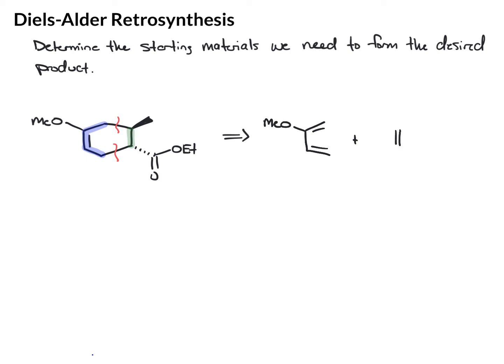One thing you want to pick out with this is since your product has the two groups trans, make sure you draw them on your dienophile trans. We have a methyl and an ethyl ester. So that's just working backwards to see what starting materials we would need to form this particular product.